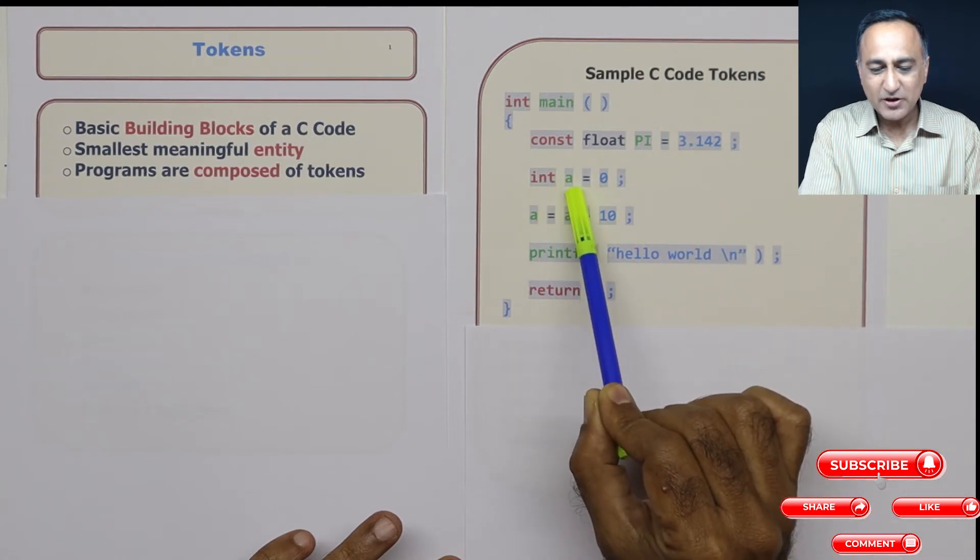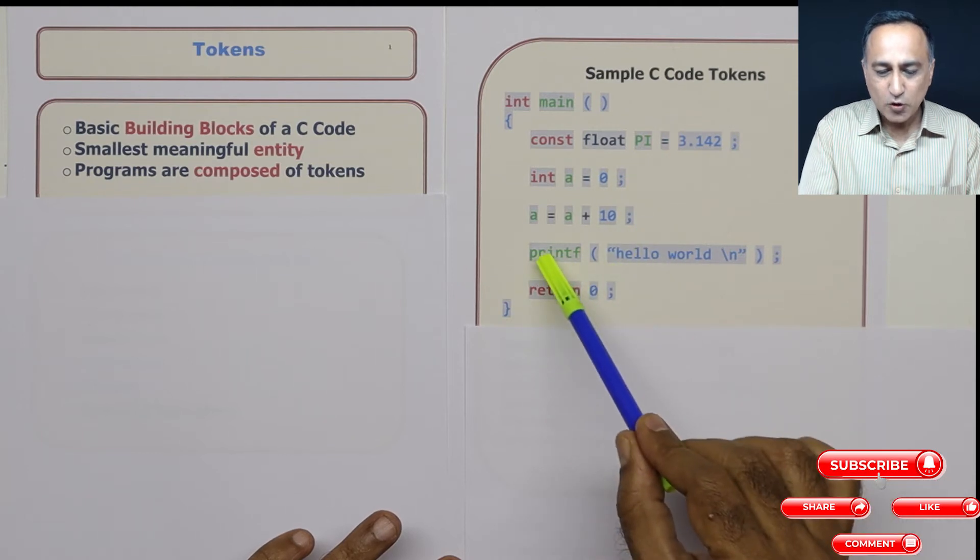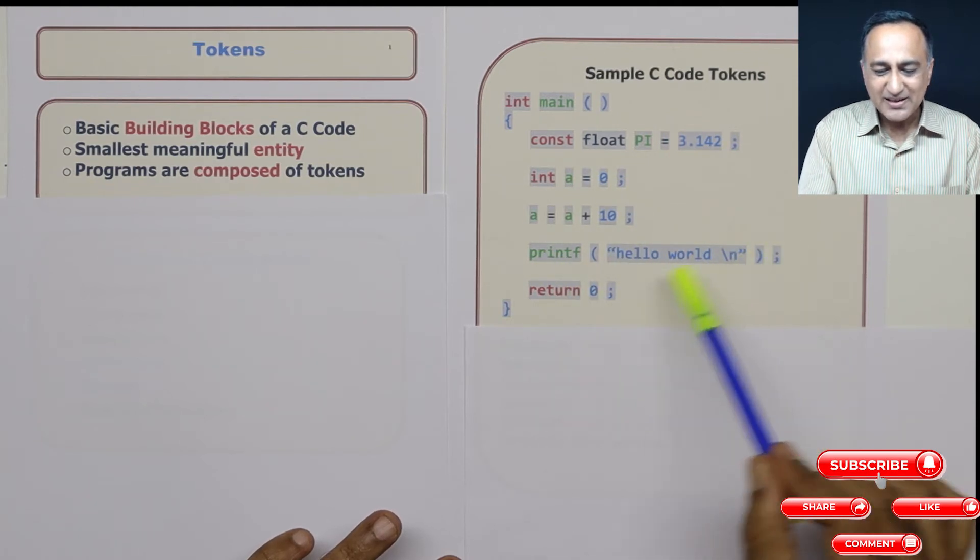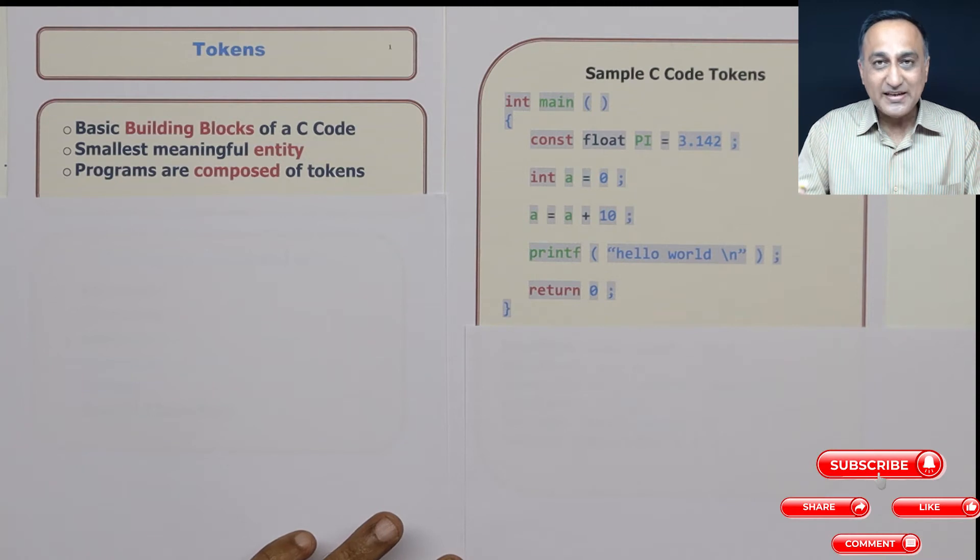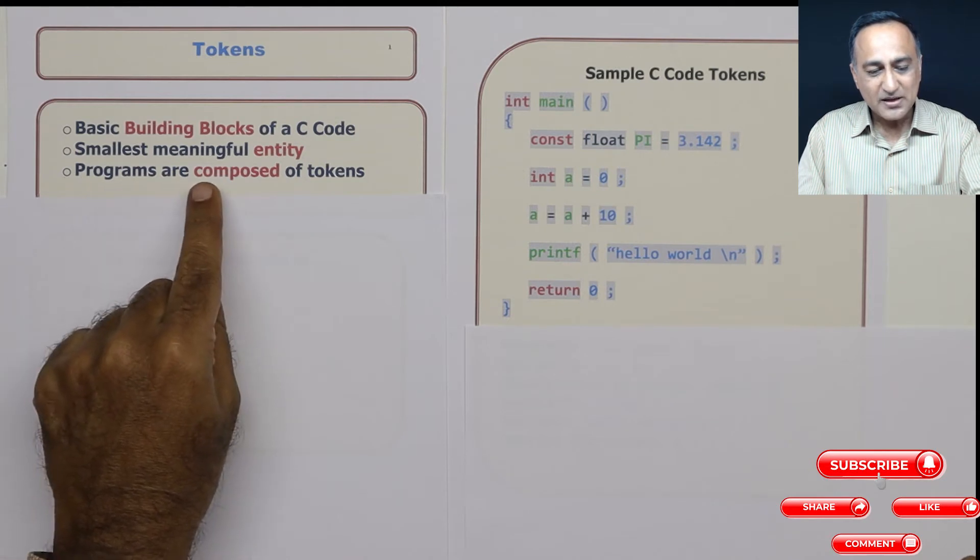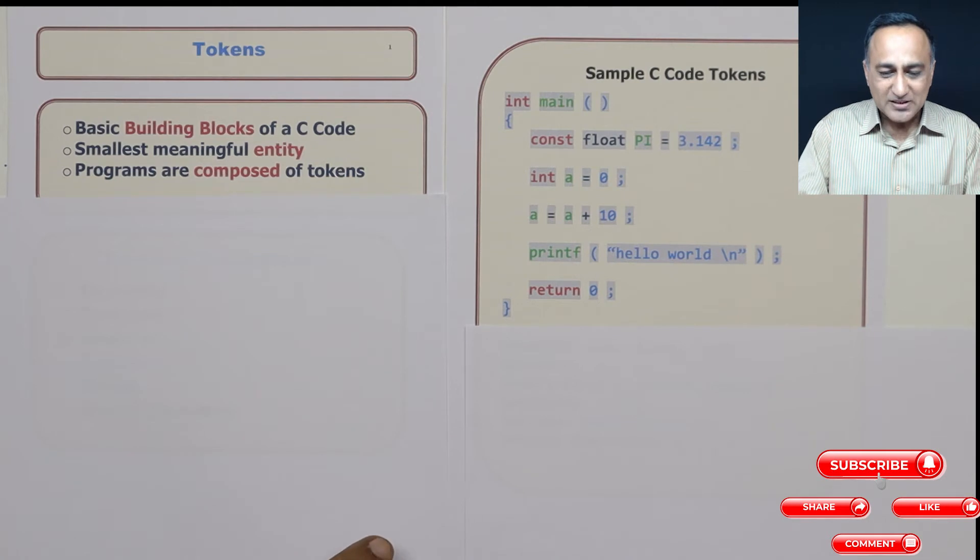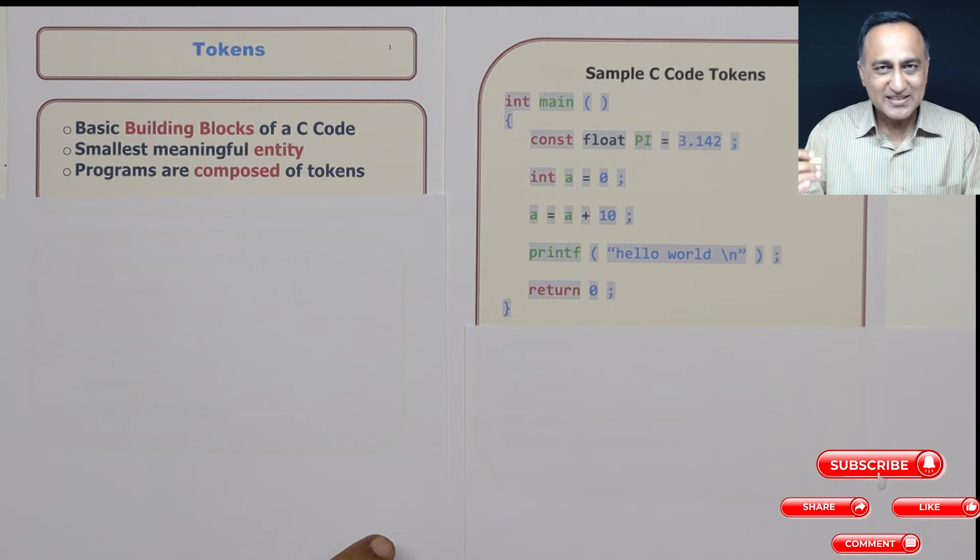pi, assignment, the constant 3.142, semicolon, int again, the variable name a, assignment 0, semicolon. All these items which have been grayed are known as individual tokens of a C program. The program, if you see, is simply a composition of tokens. Now if you look at these tokens, you should be able to think by now that there are about six kinds of tokens.